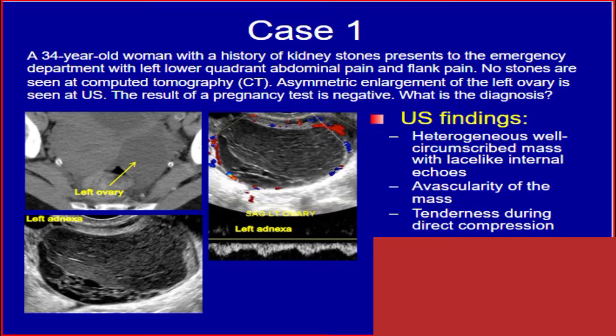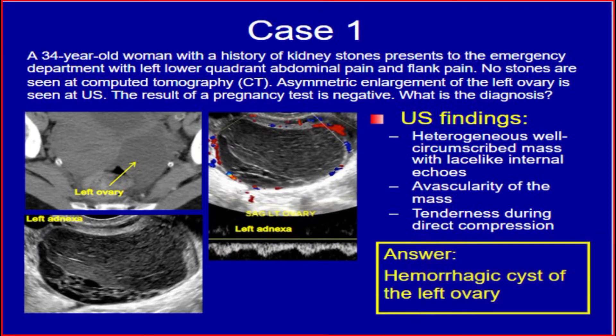Ultrasound findings: heterogeneous, well-circumscribed mass with lace-like internal echoes; avascularity of the mass; tenderness during direct compression. The answer is hemorrhagic cyst of the left ovary.